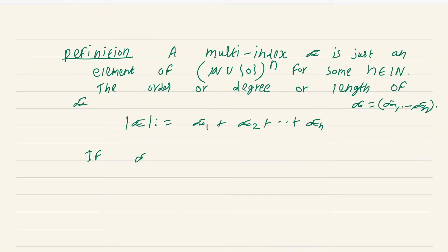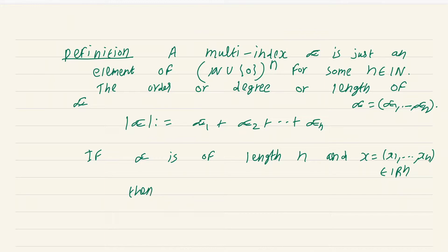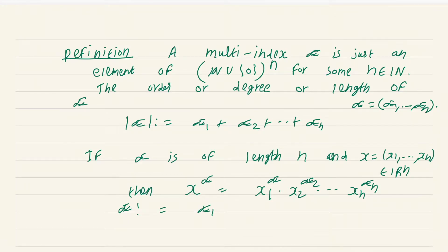If alpha is of length n and x = (x_1, ..., x_n) is an element of R^n, then we define x^alpha to be x_1^{alpha_1} * x_2^{alpha_2} * ... * x_n^{alpha_n}. And we define alpha factorial to be alpha_1! * alpha_2! * ... * alpha_n!.